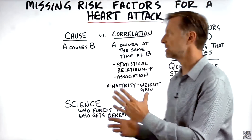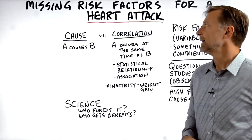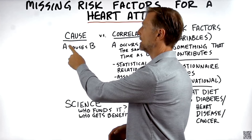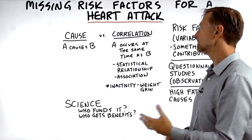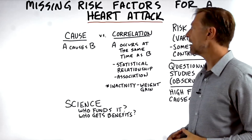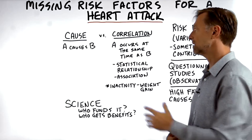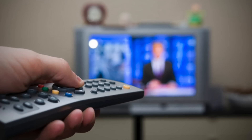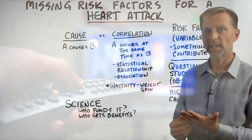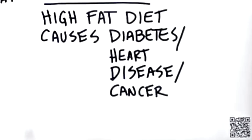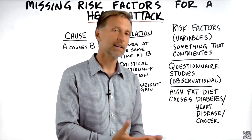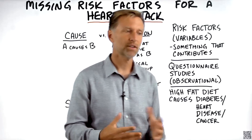I want to touch on the difference between cause and correlation, because there is a big difference. When something causes something, it would be like A causes B. But when something is correlated, A might occur at the same time as B, but that does not mean it caused B. It's a statistical relationship, an association. And unfortunately, every day on the news or the internet you'll see things like 'high fat diet causes diabetes or heart disease or cancer' — they're implying causation.